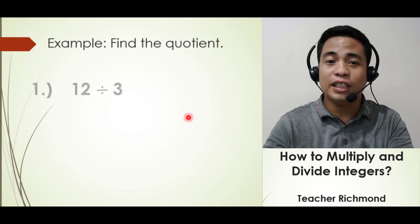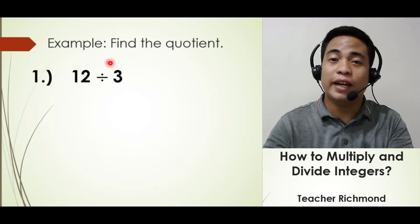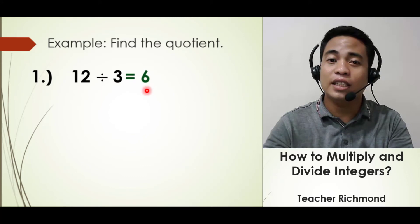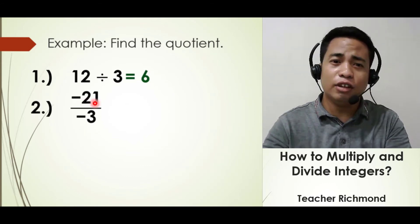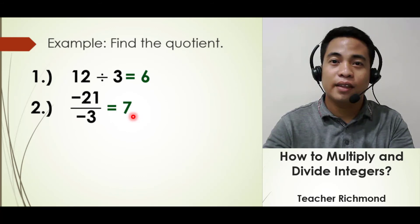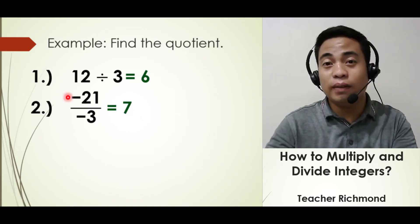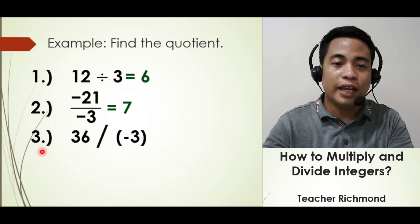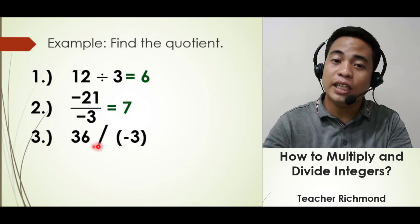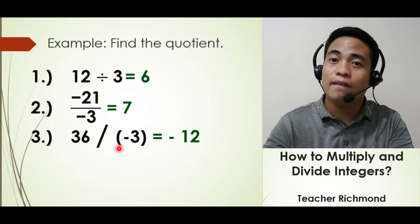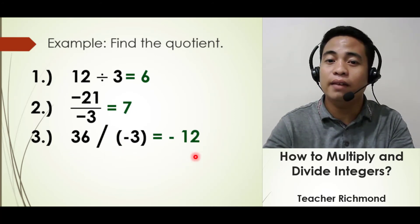Let's proceed to division of integers. We are going to find the quotient — the answer of division. Positive 12 divided by positive 3 equals positive 6. Negative 21 divided by negative 3 equals positive 7, because dividing integers with the same sign always gives a positive answer. Next example: positive 36 divided by negative 3 equals negative 12, because dividing integers with unlike signs always gives a negative answer.